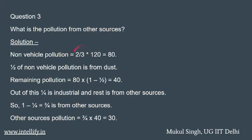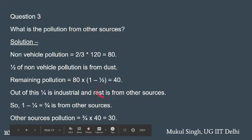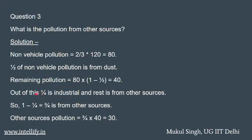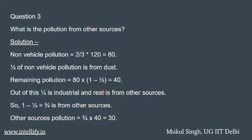अब हमें पता है non-vehicular हमने निकाल लिया — one third vehicular है तो two third non-vehicular है, that is 80. इसका half is dust, तो 40 dust है। Remaining भी 80 minus 40 is 40। इस 40 का one fourth industrial है, तो one fourth of 40 is 10. तो 40 minus 10 = 30 would be from other sources। इसे ऐसे भी देख सकते हैं: one fourth industrial है तो three fourth other sources से है, तो 3/4 of 40 = 30. तो 30 हो गया other sources से।